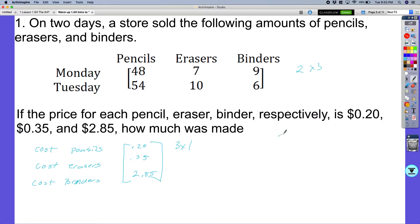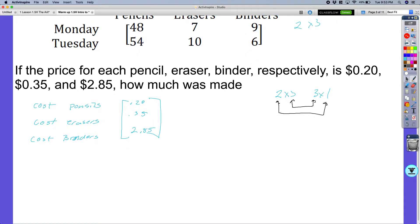If I have these two matrices that I just filled out, my choices here is I start with my original one, which is a 2 by 3, and am I going to have this one on the right side or the left side? And if you remember the previous lesson, we know that when the inside matches, I'm going to get a new answer, which is this column. And it makes sense because I have two days, so I'm going to have two rows, and I'm going to have the total cost for each one.